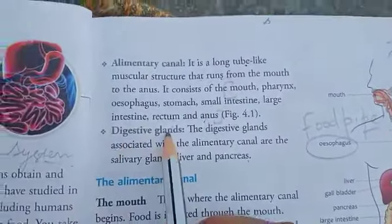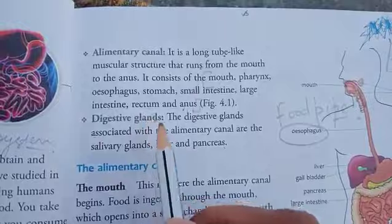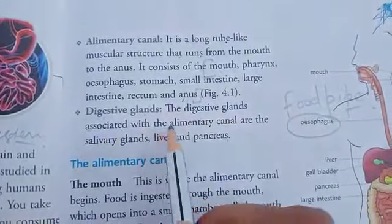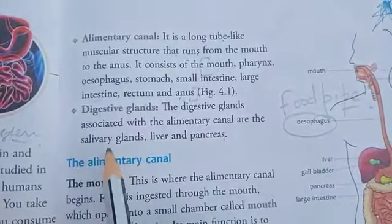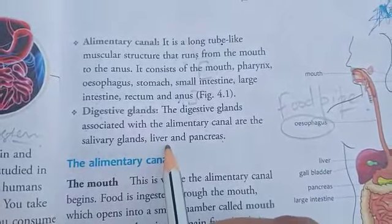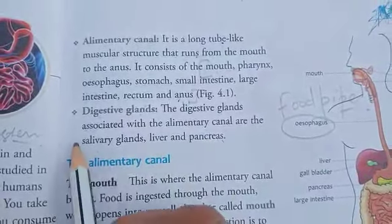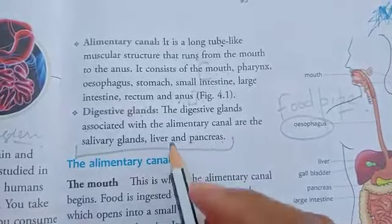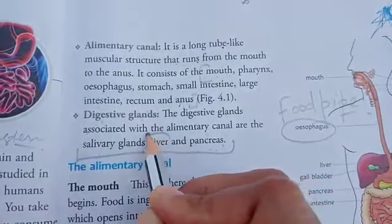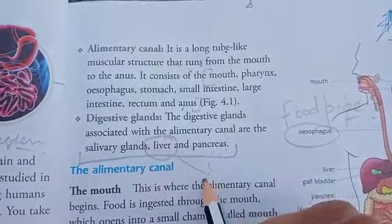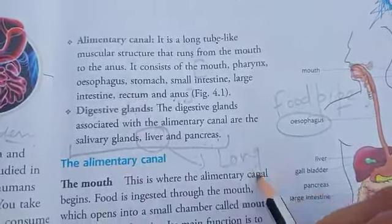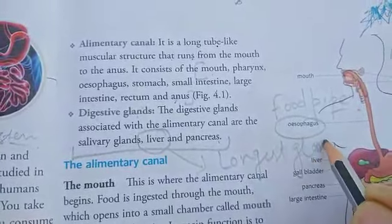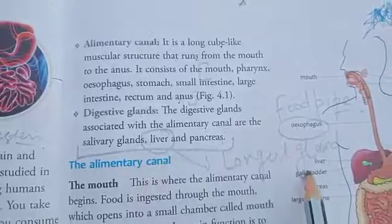The digestive glands associated with the alimentary canal are the salivary gland, liver, and pancreas. Our largest gland is the liver — this is also an important exam question. Which is the largest gland? It is the liver.